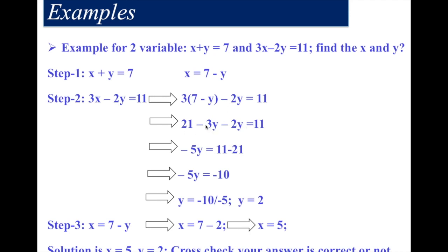Simplifying: 21 minus 3y minus 2y equals 11. So minus 3y minus 2y equals minus 5y. Bringing 21 to the other side: minus 5y equals 11 minus 21, which is minus 10. Therefore y equals minus 10 divided by minus 5. The negatives cancel, so y equals 2. Substituting y equals 2 back: x equals 7 minus 2, therefore x equals 5.